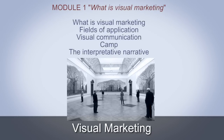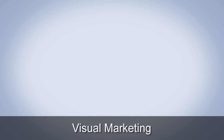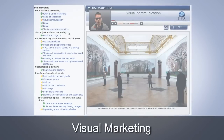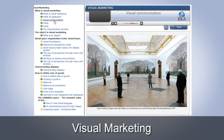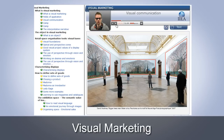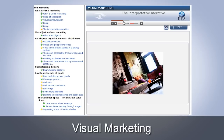In the first module, what is visual marketing, we discuss visual marketing and the way it is used in the fields of fashion and design, and explain the importance of the representation of an object for the purposes of communication. We also explain what camp is, and how it interprets reality according to current sensibilities. The interpretative narrative helps us to understand how the product showcases the moment it enters the market system, and how important its representation is.